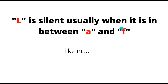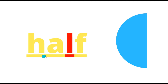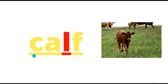L is usually silent when it is in between A and F, like in half. This L is silent. Half means half of anything. Calf — the young one of a cow — calf. The L is silent here too.